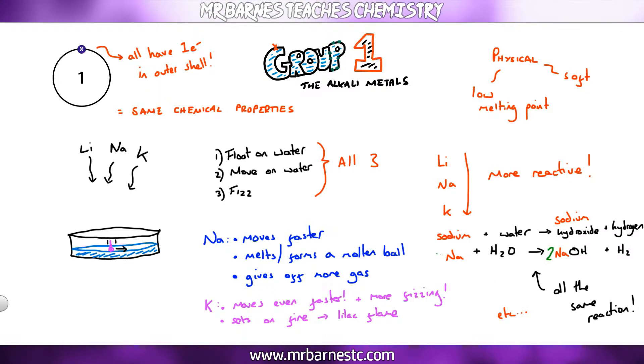And some of you will have pointed out this is not balanced, so what you have to do is look at the number of letters, the number of symbols on either side and make sure it's even, which would end up with two in front of your NaOH, two in front of your Na, and two in front of your H2O.